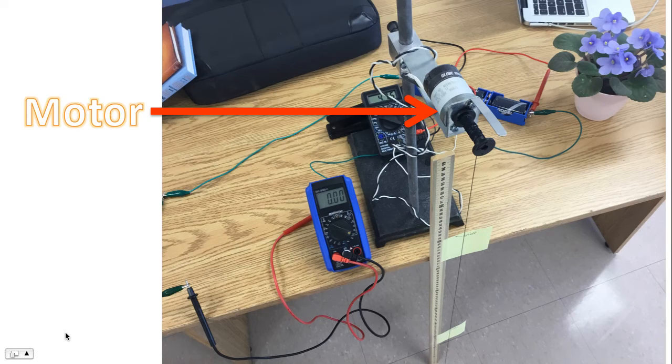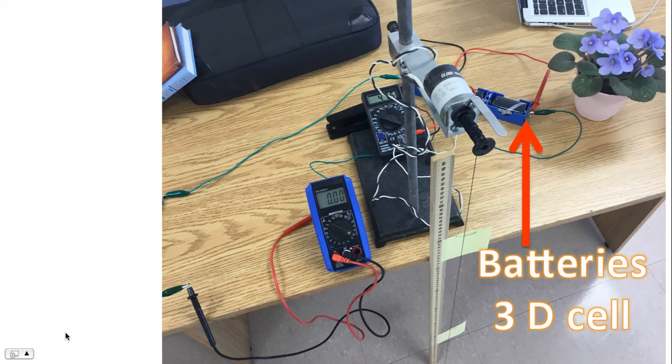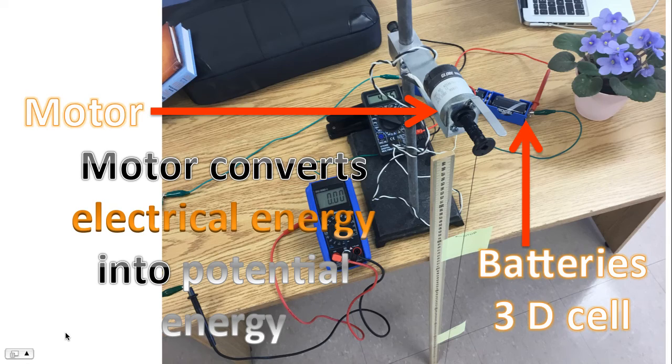And so there's our motor. The goal is to determine the efficiency of that motor while lifting an object. The motor is powered by three D cell batteries. Now a motor converts electrical energy into potential energy. The question is how efficient is it at converting electrical energy into potential energy? That's our goal today.